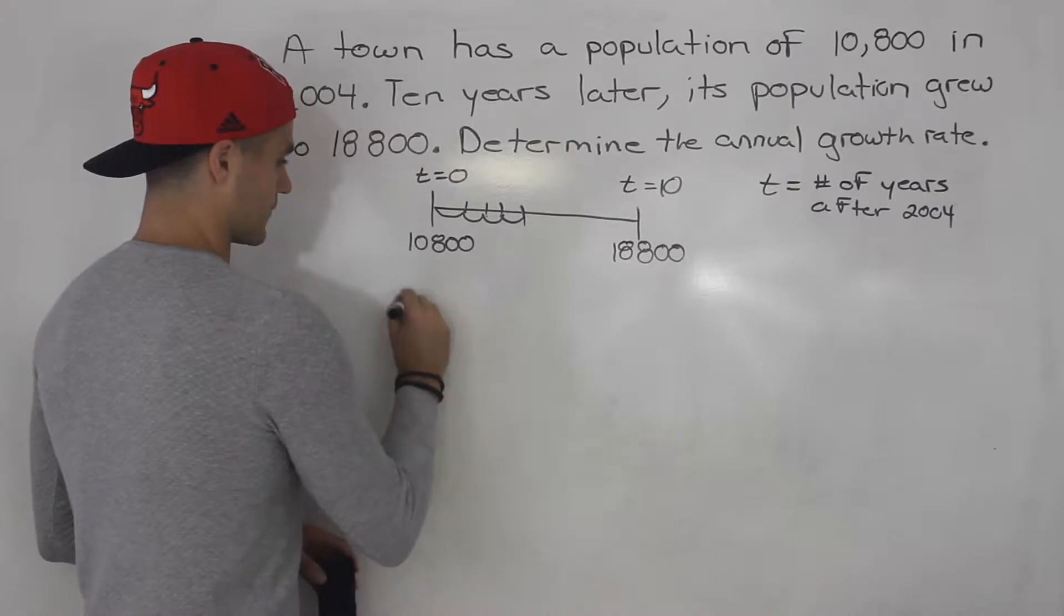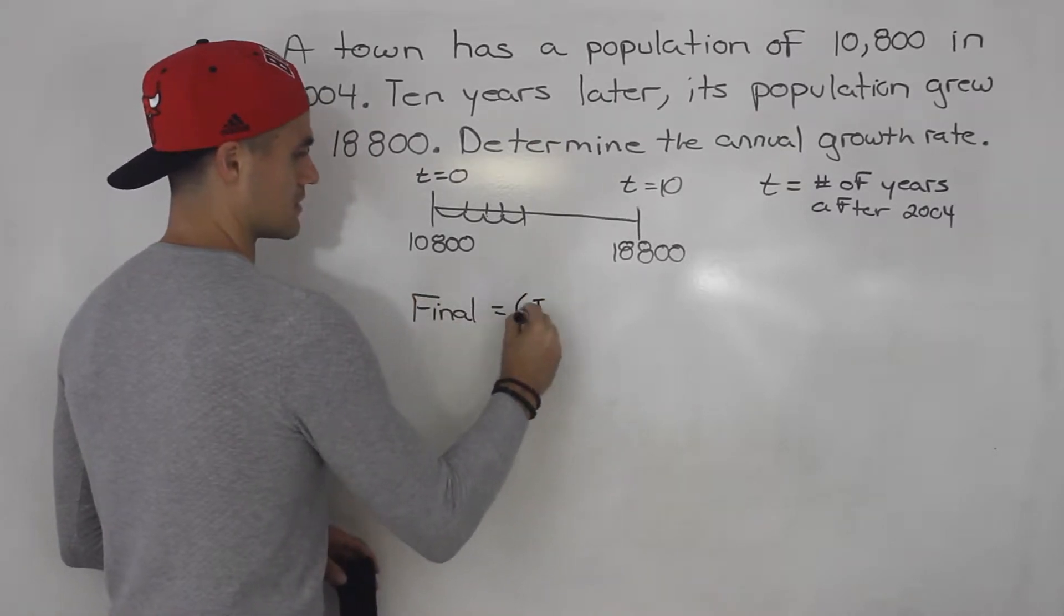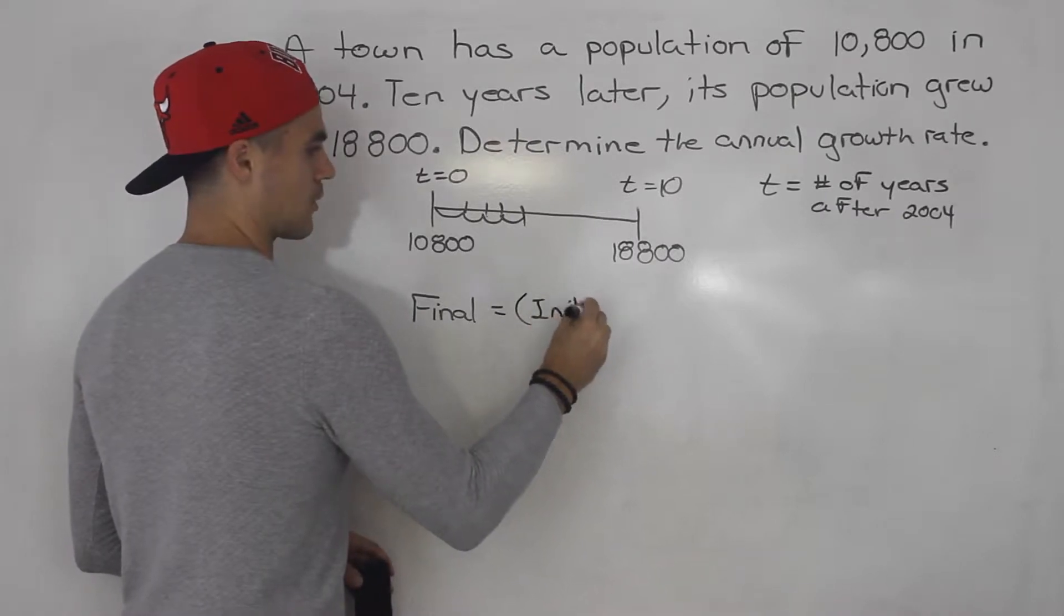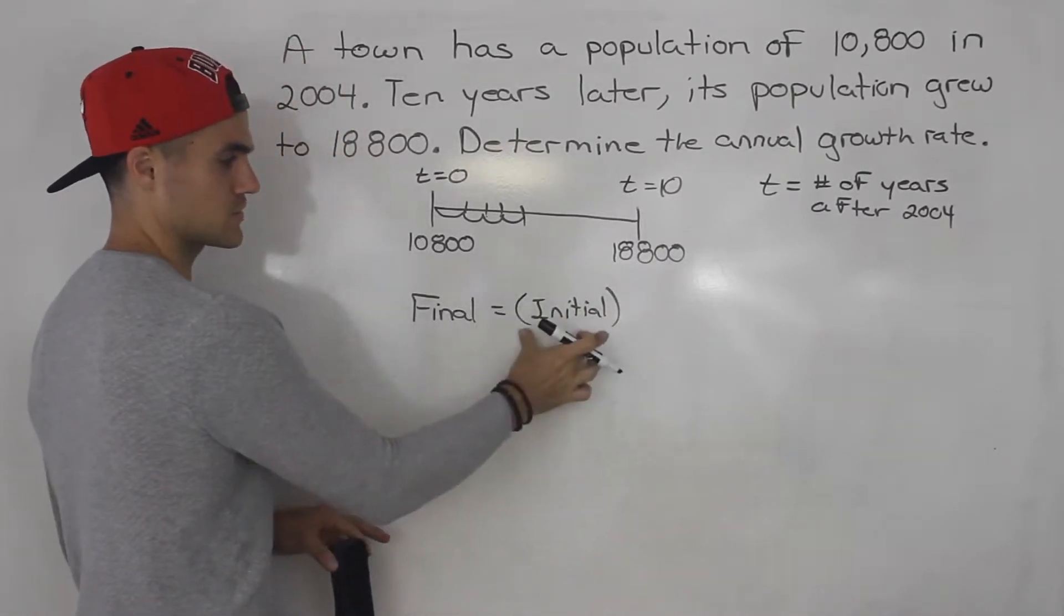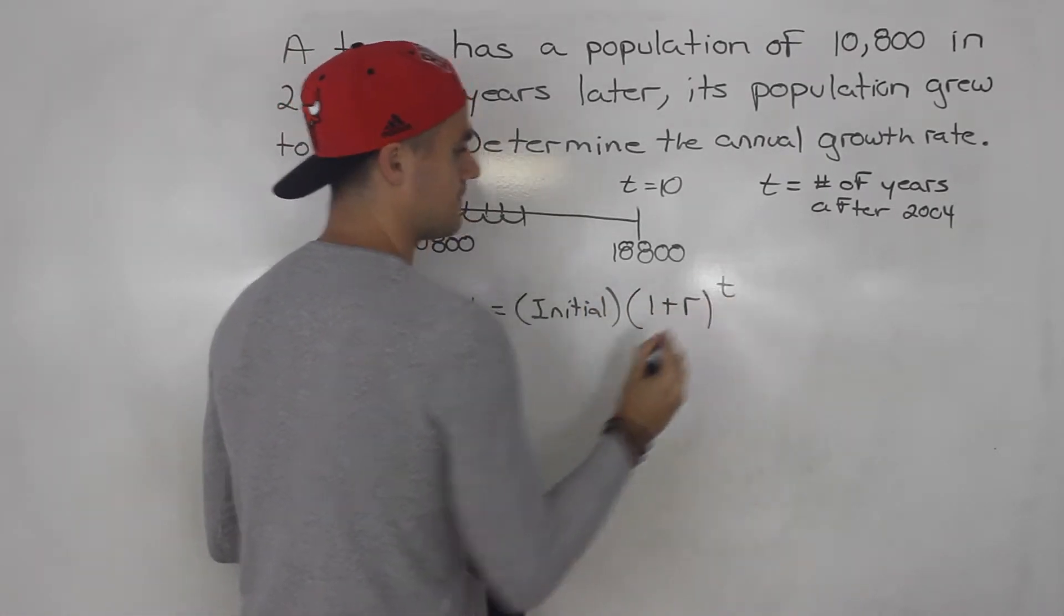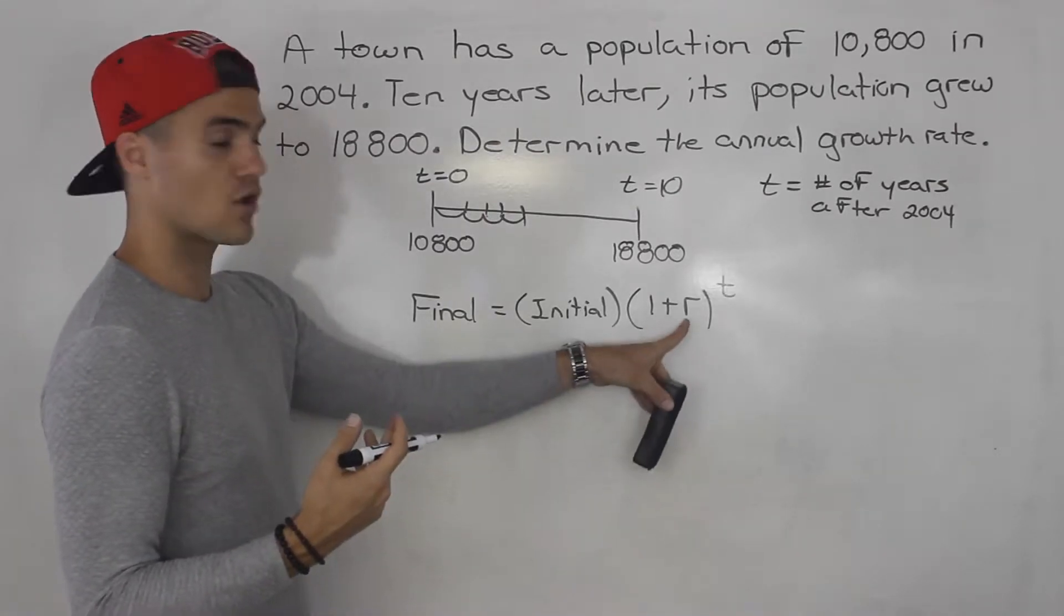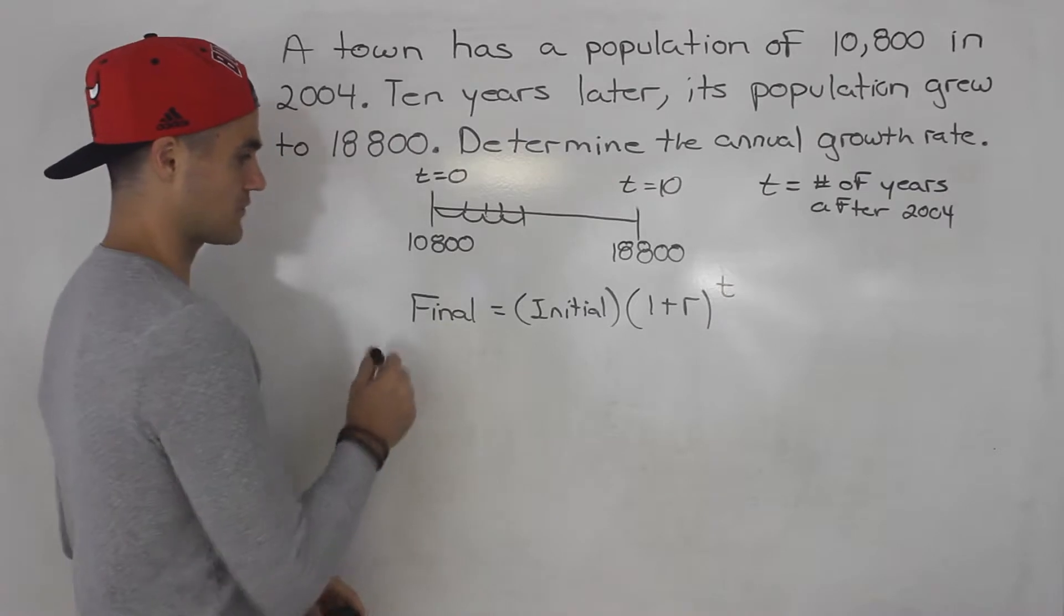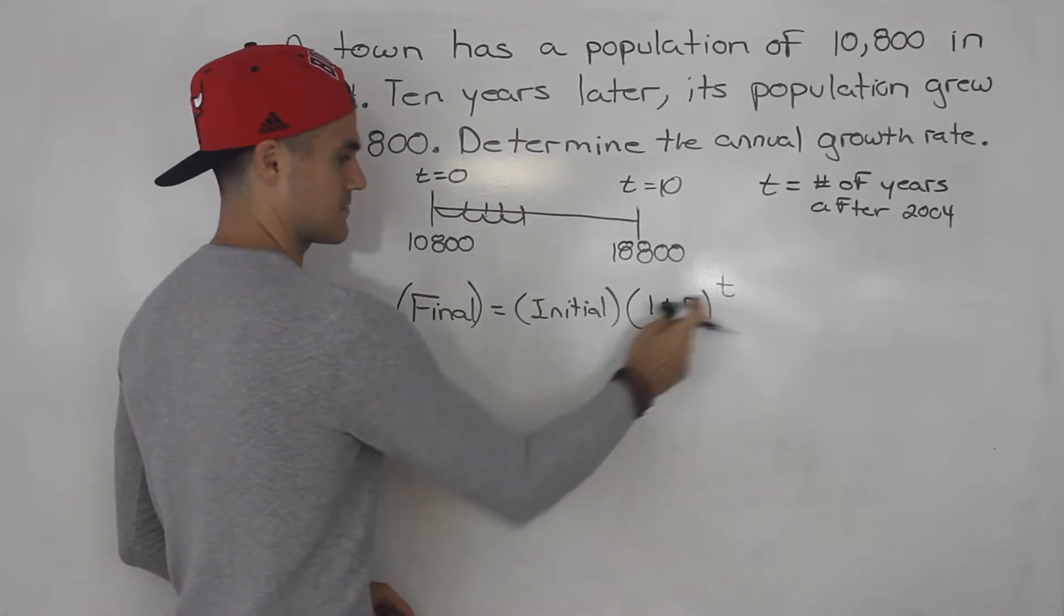So what we have to do here is take our general expression that we know of: final amount is equal to initial amount times (1 plus r) to the power of t, and we are solving for the annual growth rate. So we're going to be solving for this r value here. That means we have to plug something in for the final amount, the initial amount, and the t amount.